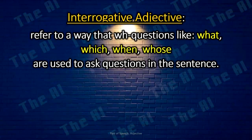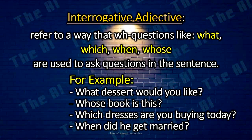Interrogative adjectives refer to the way that wh-questions — what, which, when, whose — are used to ask questions in a sentence. For example: What dessert would you like? Whose book is this? Which dresses are you buying today? When did he get married?